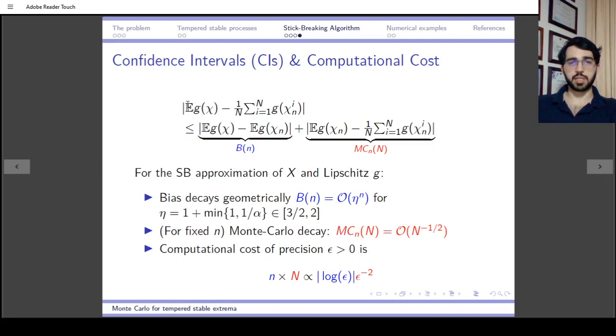In Monte Carlo, what we want to do is estimate this expectation. Say you use a normal Monte Carlo, so you just take the average of N approximations for independent simulations of this approximation of level n.